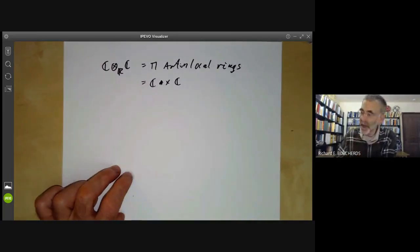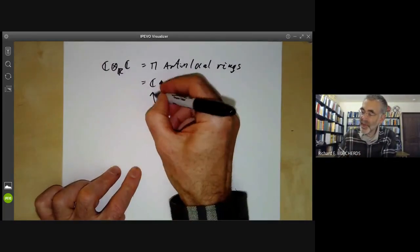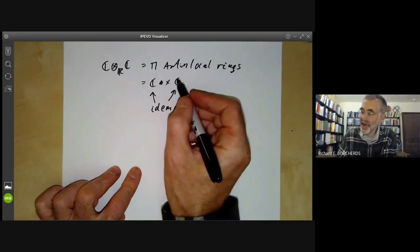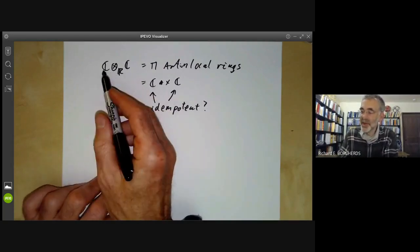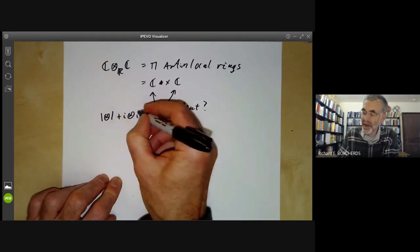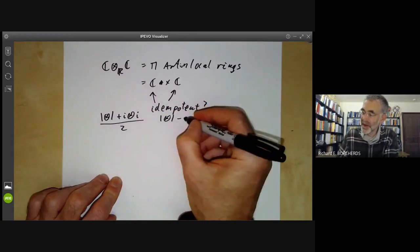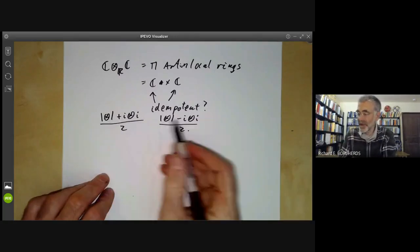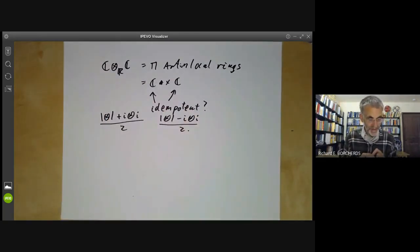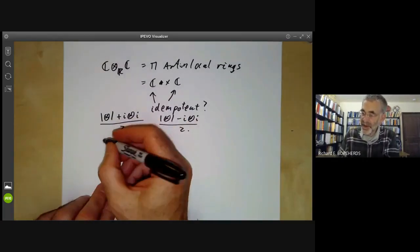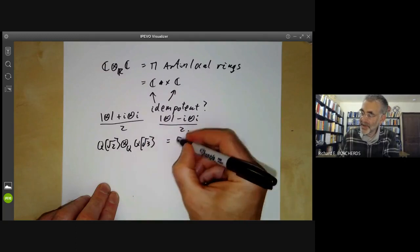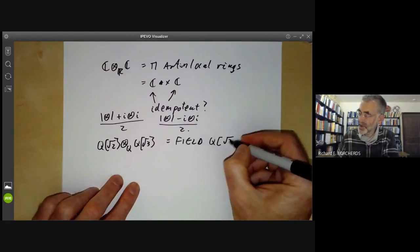If it splits as a product of two things, these should be generated by idempotents, because the unit of each factor will be an idempotent in the ring. The two idempotents are (1⊗1 + i⊗i)/2 and (1⊗1 − i⊗i)/2. You can check that both of these square to themselves, giving the decomposition into a product of Artinian local rings. Another example: Q(√2) ⊗_Q Q(√3) is actually a field, Q(√2, √3).